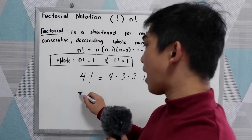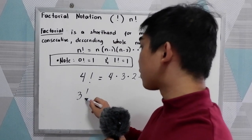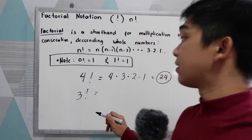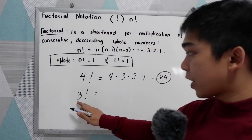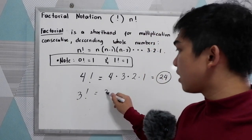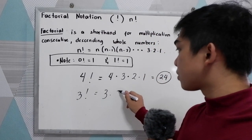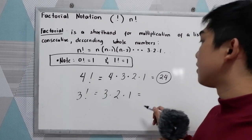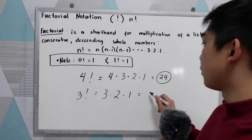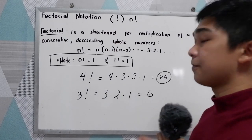Let's say we have 3 factorial. We simply start with our n: 3 times 2 times 1. That is equal to 6.